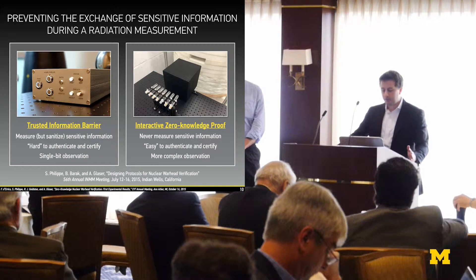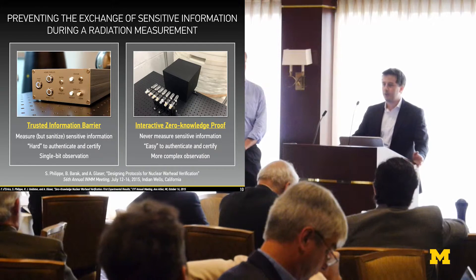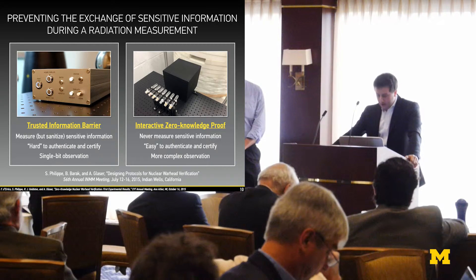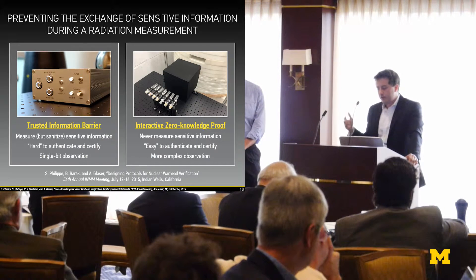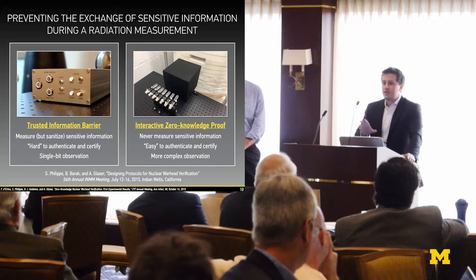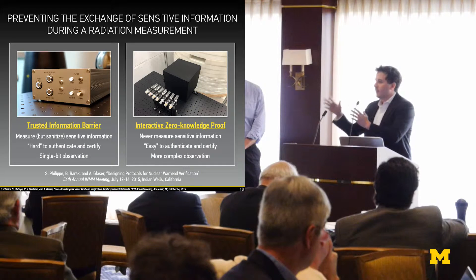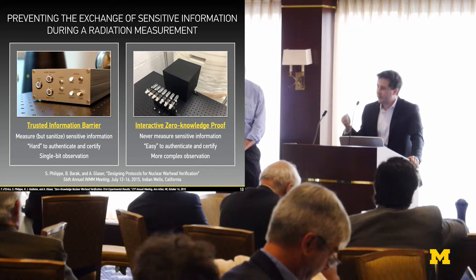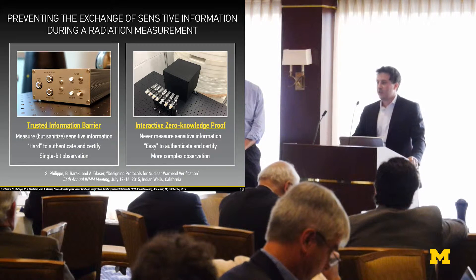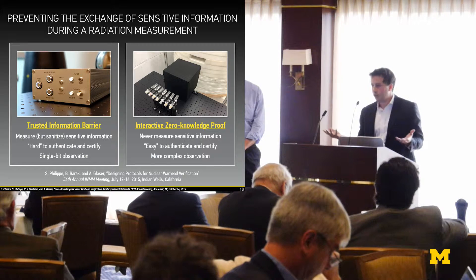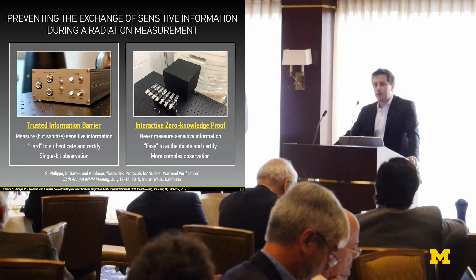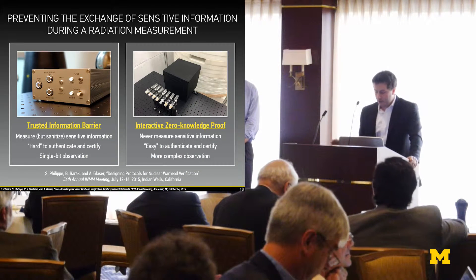The information barrier concept measures sensitive information and sanitizes it, producing a single-bit observation—red light or green light. On the other hand, what we're developing at Princeton, and what our colleagues at MIT are working on, is a concept called Zero Knowledge. This comes from the crypto community—a cryptographic advance invented for digital applications but not the physical world, and we're trying to bring it back. Zero knowledge doesn't mean super-highly secure, because we don't measure sensitive information in the first place. It is much easier to authenticate and certify because we don't use electronics—we build our analysis on the laws of thermodynamics.